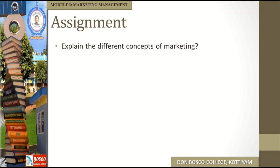In summary: the Production Concept is about making products available and affordable. The Product Concept is about high quality products. The Selling Concept is about aggressive selling to push whatever is produced. The Marketing Concept is about finding the right product for the right customer's needs and wants. Finally, the Societal Marketing Concept is about satisfying customer needs while considering the environment, social impact, and future generations. The assignment question is: Explain the different concepts of marketing. Thank you for listening. Have a nice day.